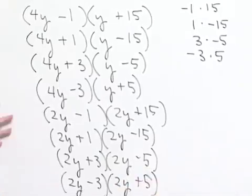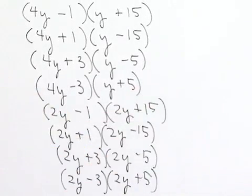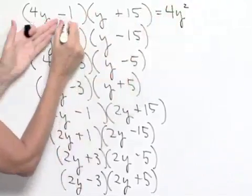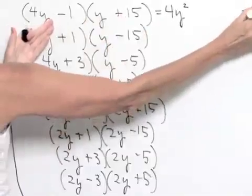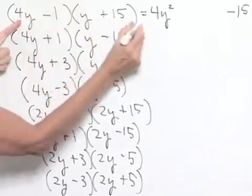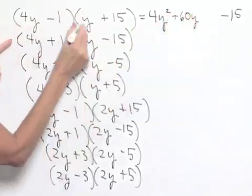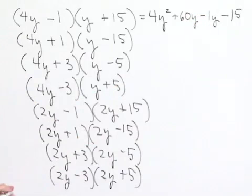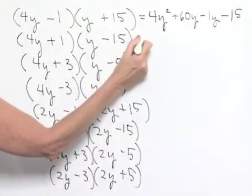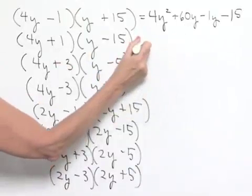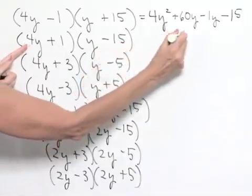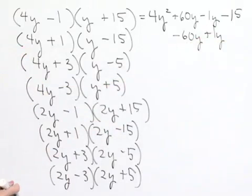At this point, any of these combinations will correctly give us the first and last terms. What we're really interested in is the outer and inner terms when we multiply. For 4y minus 1 times y plus 15: the outer term gives plus 60y, the inner gives minus 1y — that won't combine to give negative 4y. For 4y plus 1 times y minus 15: we get negative 60y plus 1y — that does not give negative 4y.